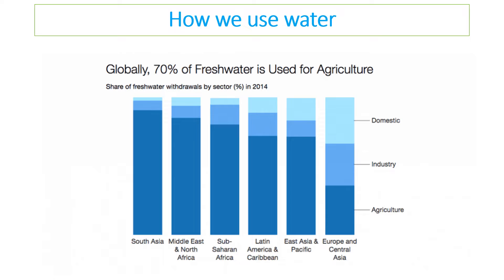We use water globally for mainly three different reasons: domestic, industry, and agriculture. Seventy percent of our water is used globally for agriculture, so agriculture has a big environmental impact. In different areas there are different amounts of water use — domestic use is generally the smallest, apart from in Europe and Central Asia, while agriculture is the main use overall.